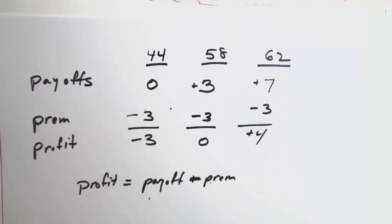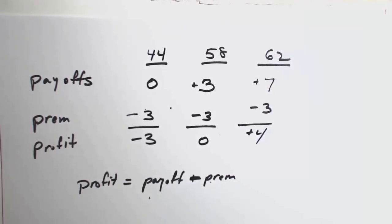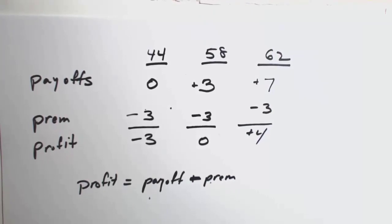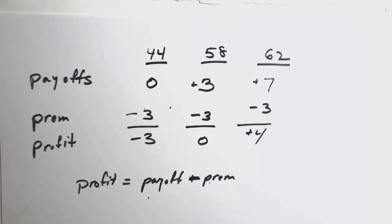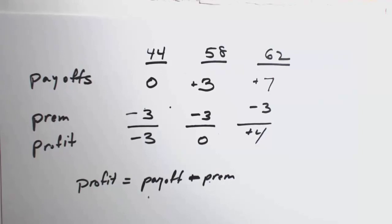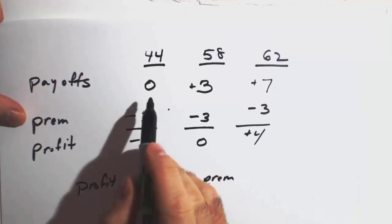Everything here is on a per share basis. Most of the time, information is given on a per share basis, and if the problem tells you it's one contract or ten contracts, you multiply everything out at the end — payoffs and profits per share times the number of options. That way you save yourself a lot of time instead of multiplying everything by 100 at each step, and it reduces your chances of making errors.